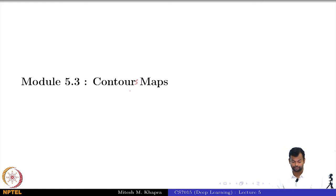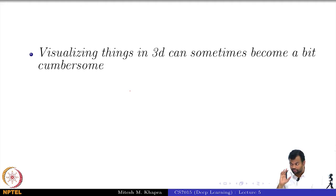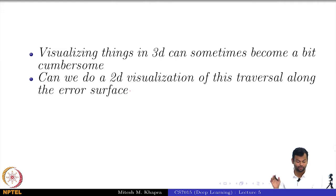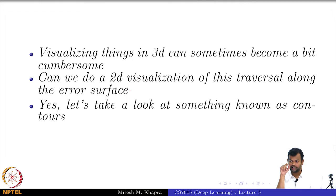So we will look at something known as contours. Now, visualizing things in 3D can sometimes become a bit difficult, especially for the person who is making the slides. So can we do a 2D visualization of this traversal? Have I done this in the ML course? No, okay, good. Can we do a 2D visualization of this traversal along the error surface? So for that, we need to understand something known as contours.